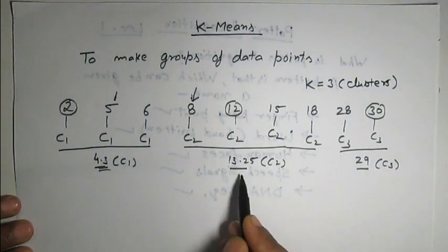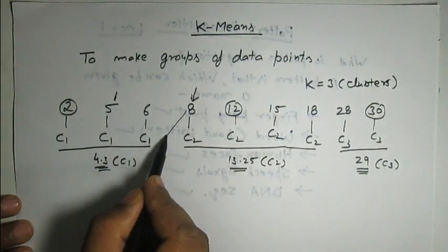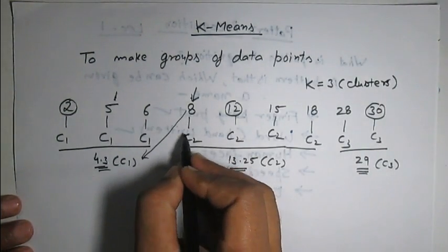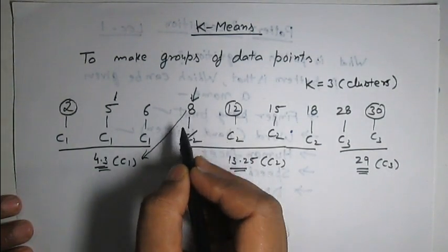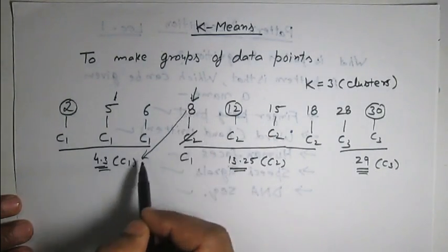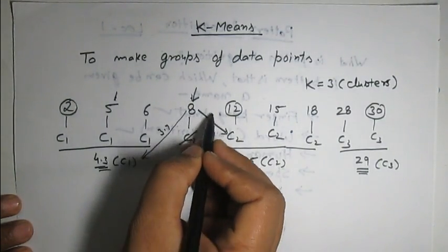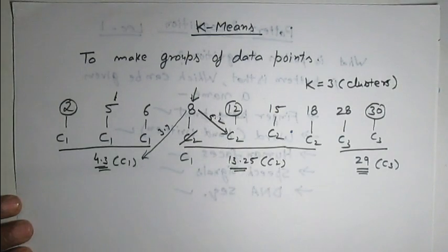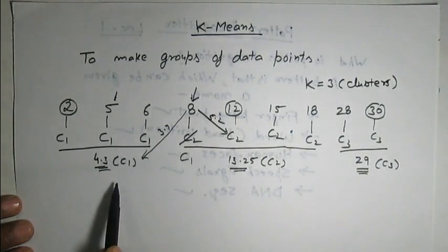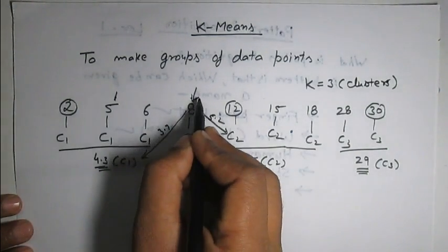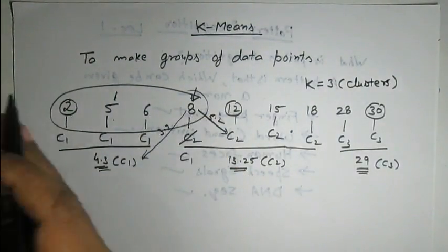With these new values of cluster centers, we can see that the distance of point 8 is least from C1 — specifically 3.7 from C1 and 5.2 from C2. So previously it was a member of C2, but now this point will be assigned the label of C1. The members of C1 are now 2, 5, 6, and 8. We will do this process for all the data points.